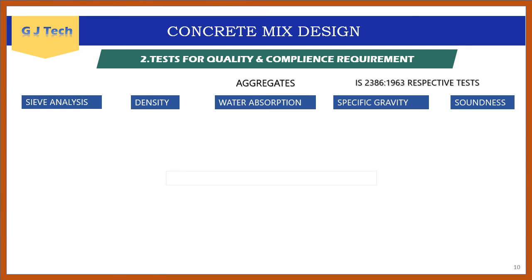Tests on aggregates: both coarse and fine aggregates are tested as per IS 2386-1963. Common tests for both are sieve analysis, density, water absorption, specific gravity, and soundness. Sieve analysis or particle size distribution is very important — its significance will be explained in the next slide.